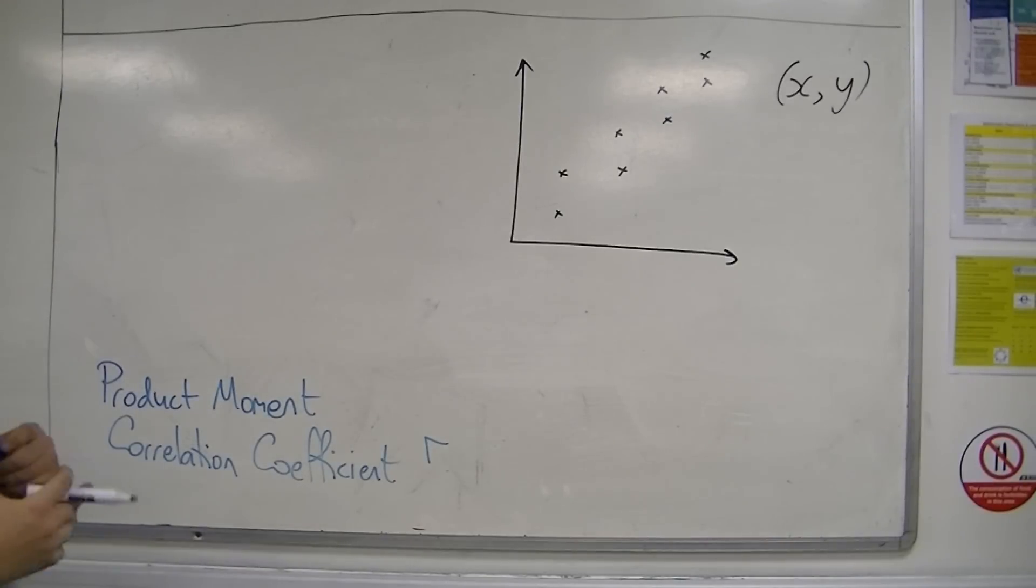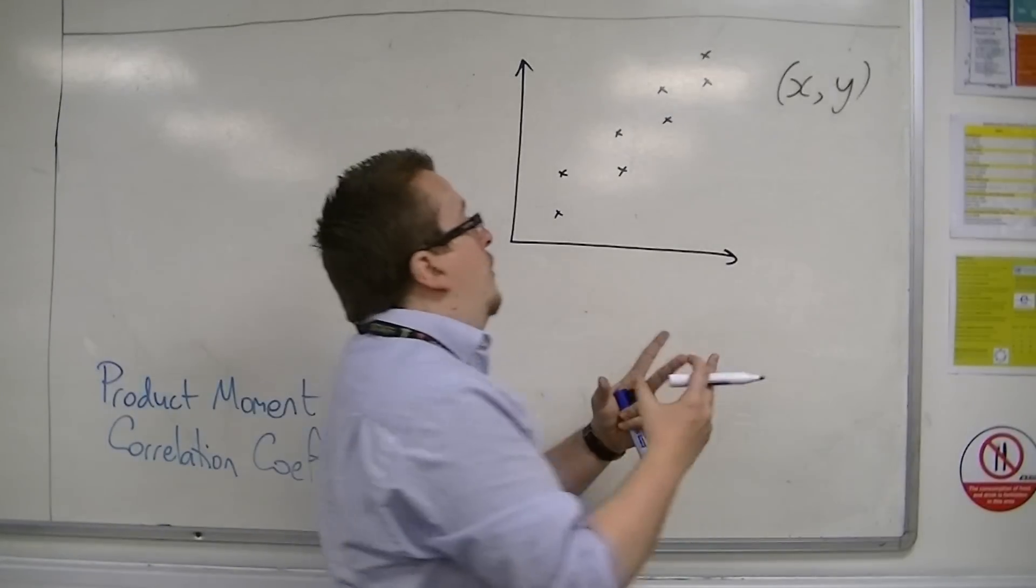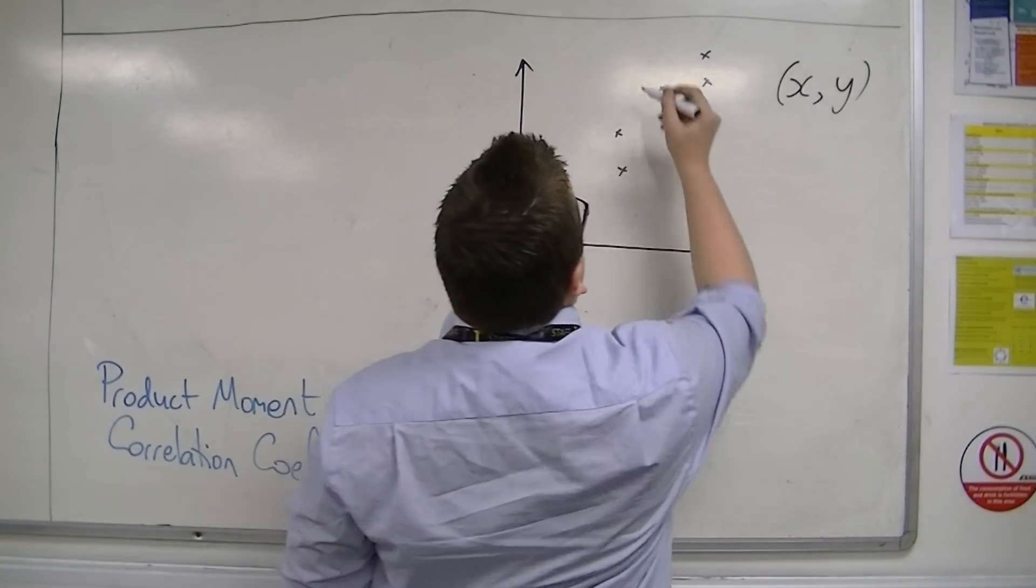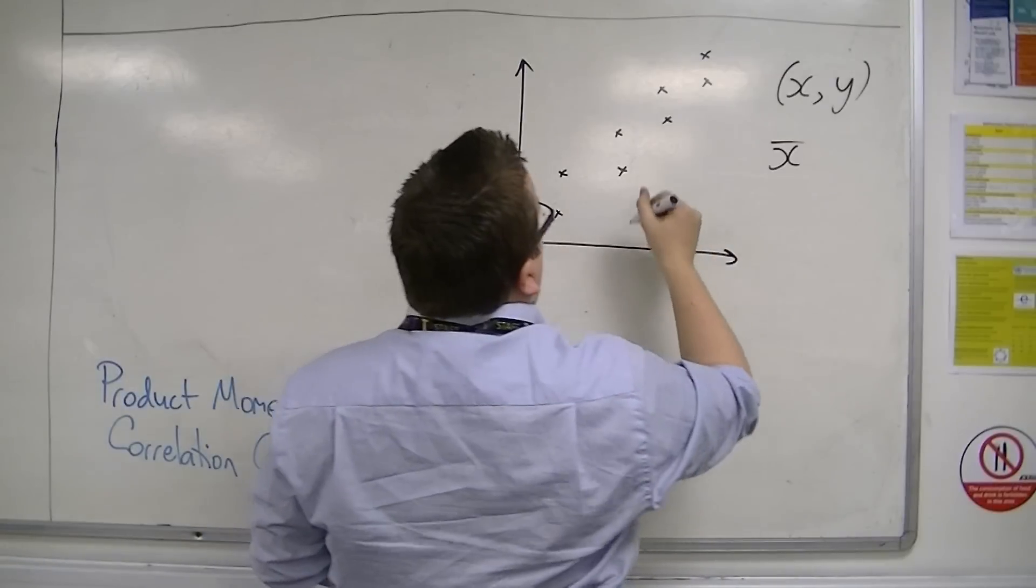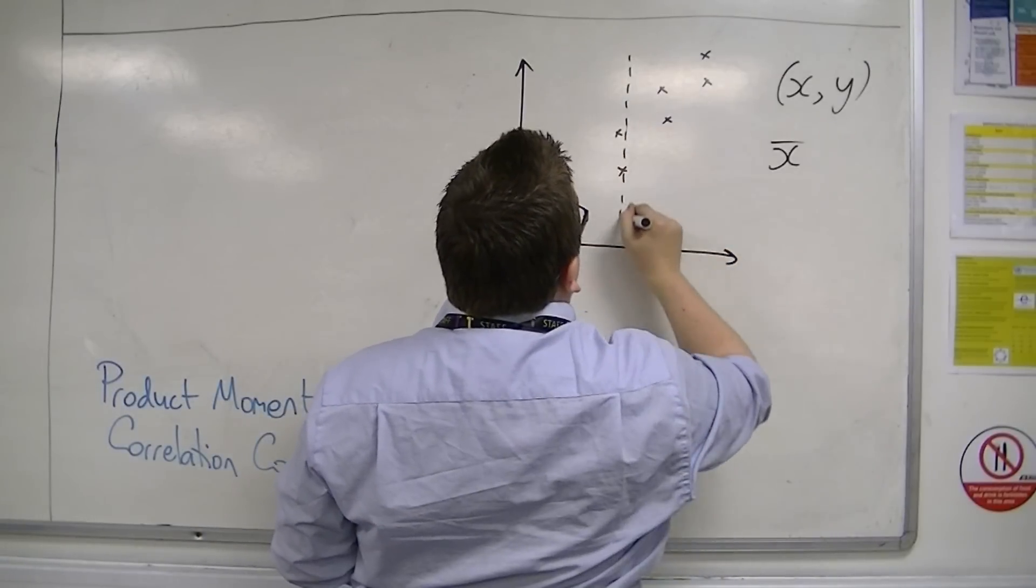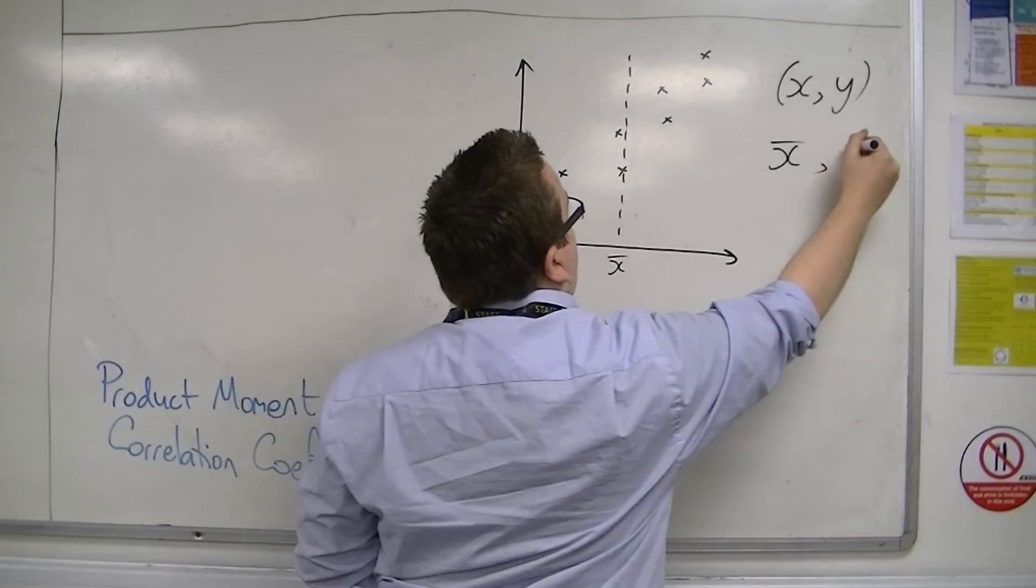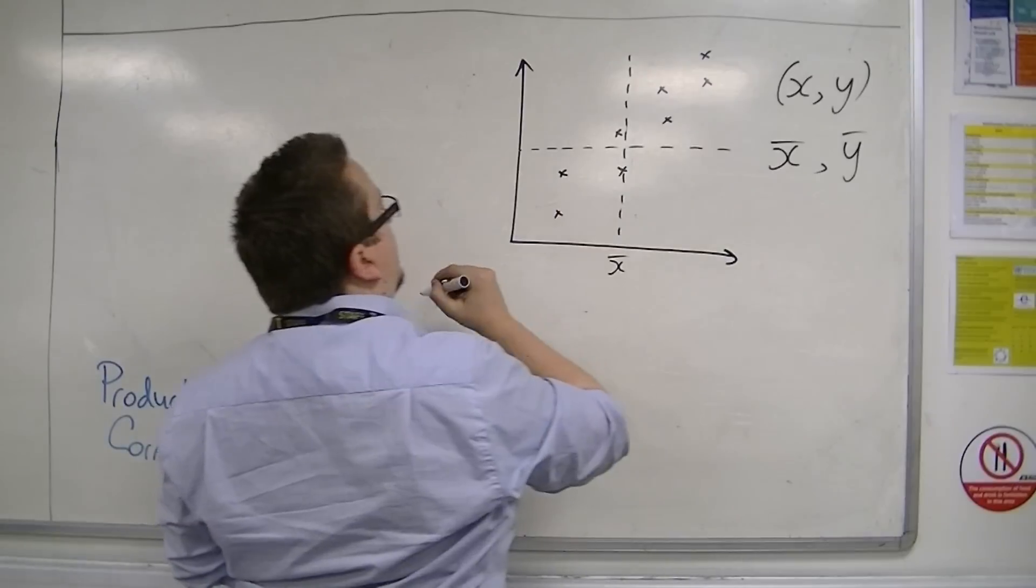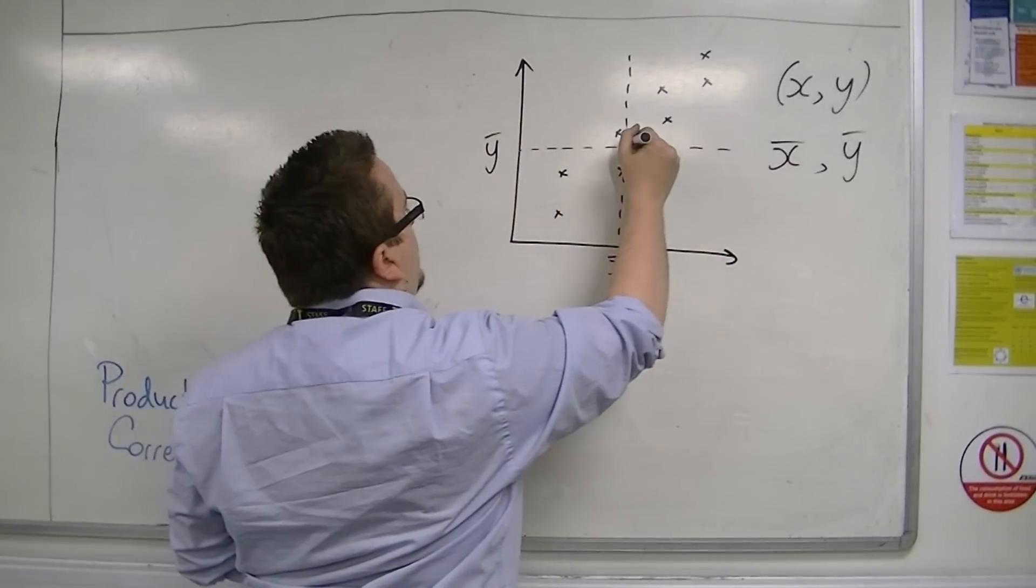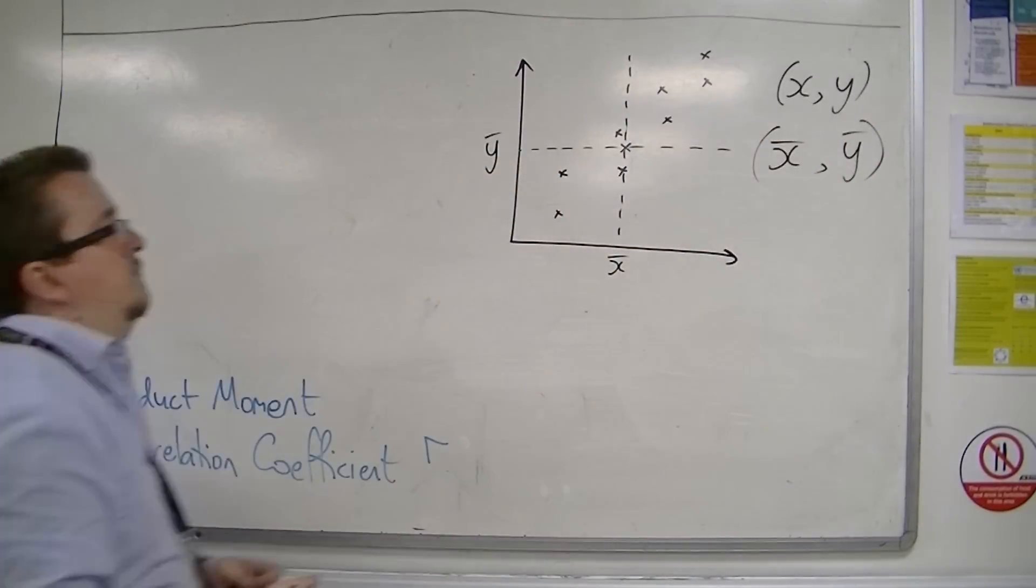What you could do is you could find out the mean of the x-values, so you could work out x-bar, and then you could plot it on your graph, so that would be your x-bar. And then you could find out y-bar, so the mean of the y-coordinates. And so you'd have this point in the middle, x-bar, y-bar, right in the middle.